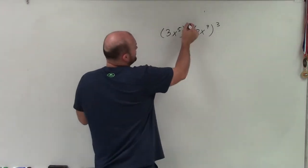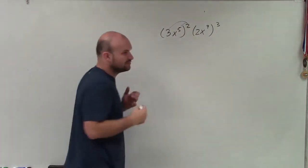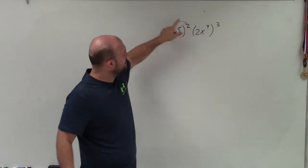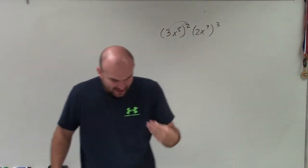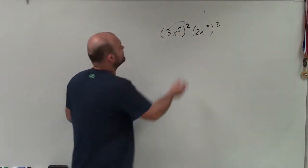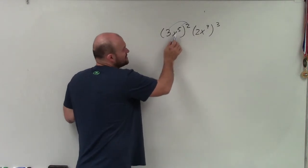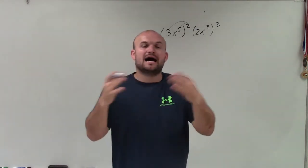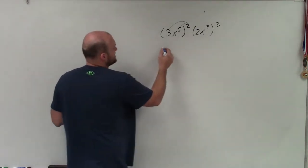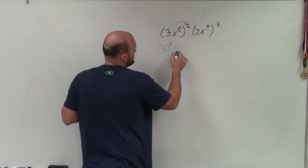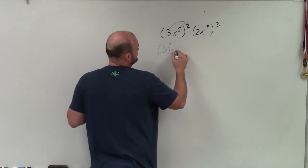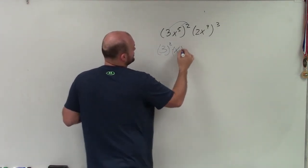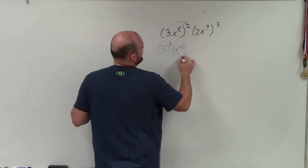Now when I distribute this, that's what the power to product rule states. What I'm doing is not only distributing it like multiplication distributing, but I'm raising each and every one of these terms to that power. So if I have x to the fifth raised to the second power, I'm going to write it in that format: 3 squared times x to the fifth squared.